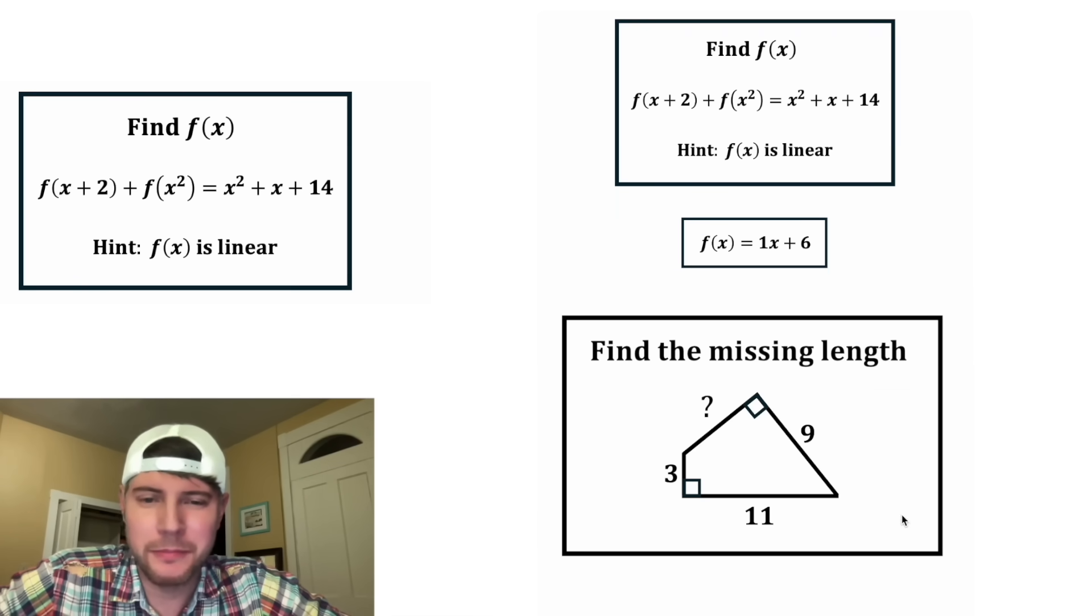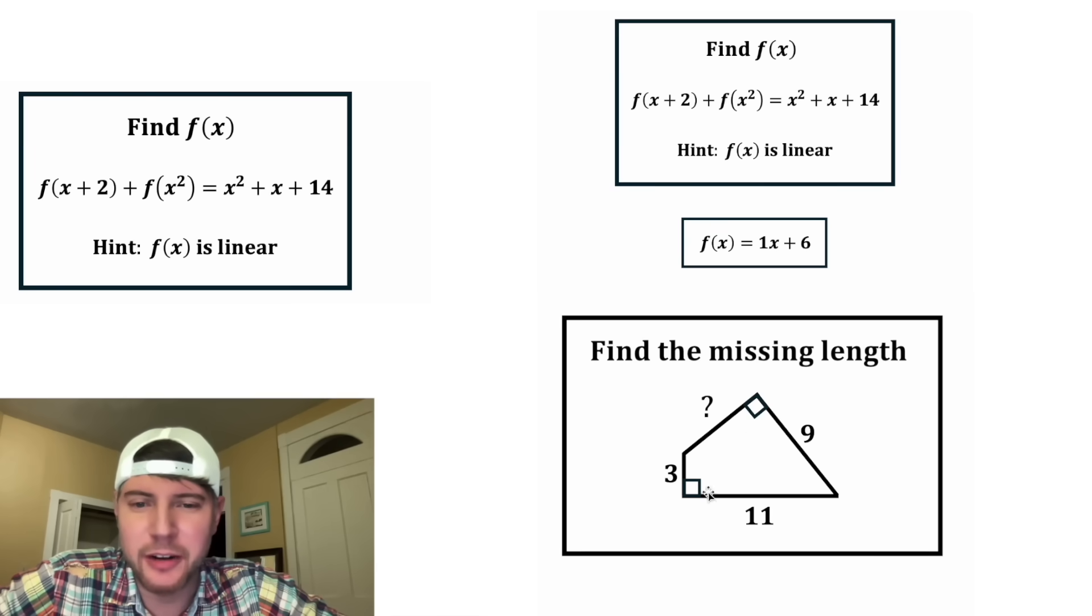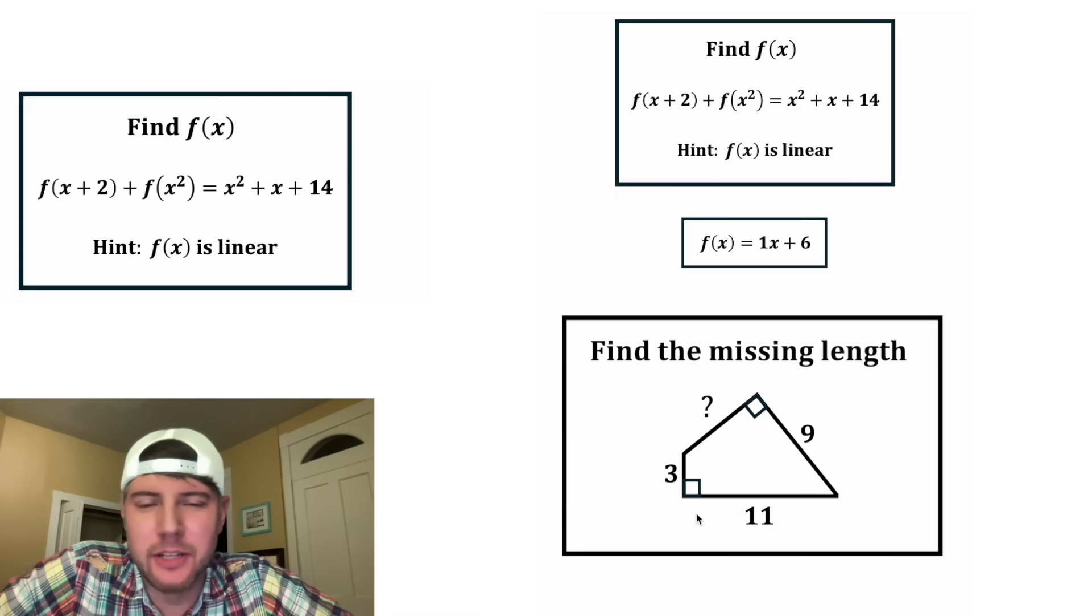And here's the question for tomorrow. We're given an irregular quadrilateral with 2 right angles. Three of the sides are known, but the 4th side is unknown. What is the length of the 4th side? This looks like a fun one. How exciting.